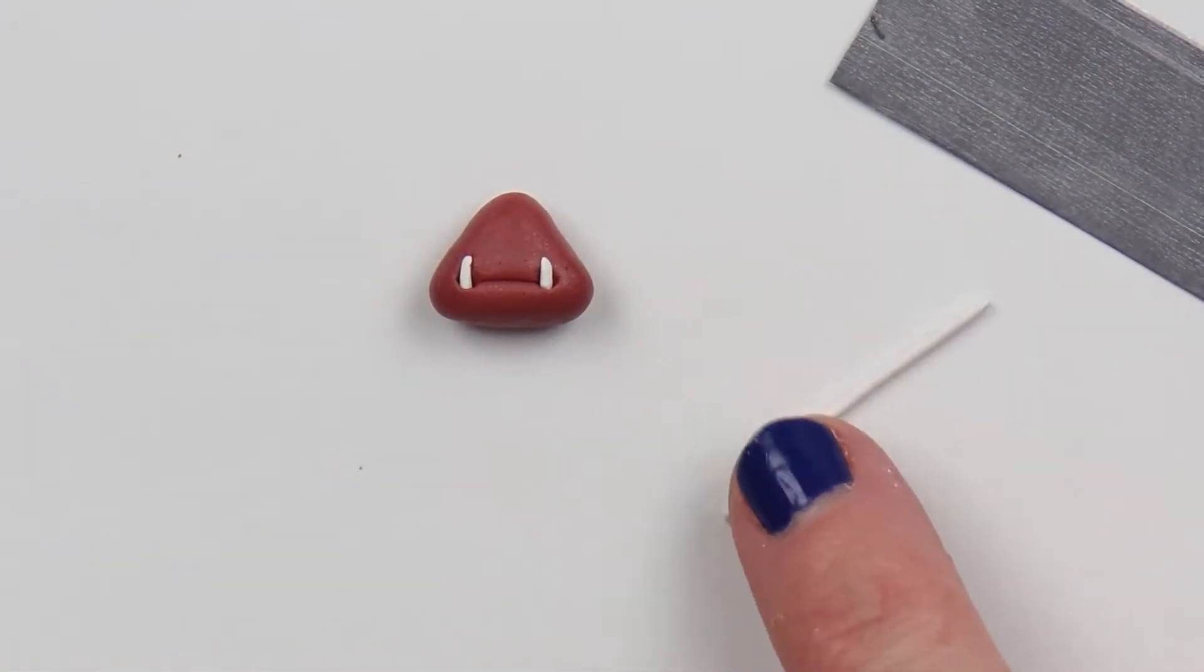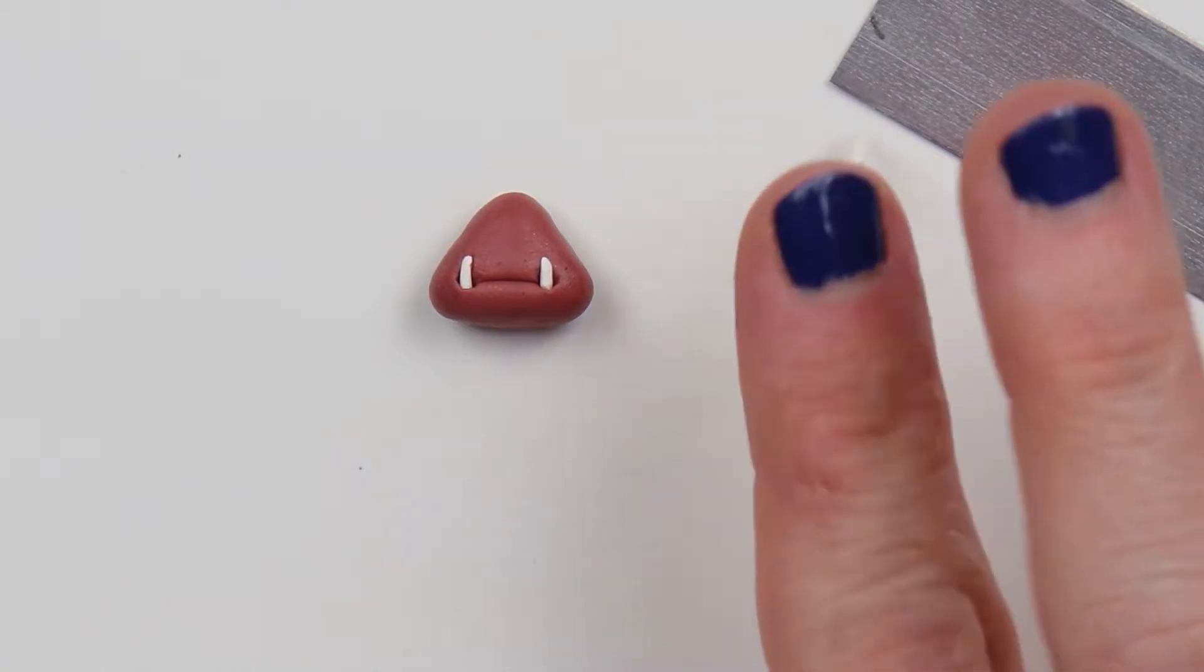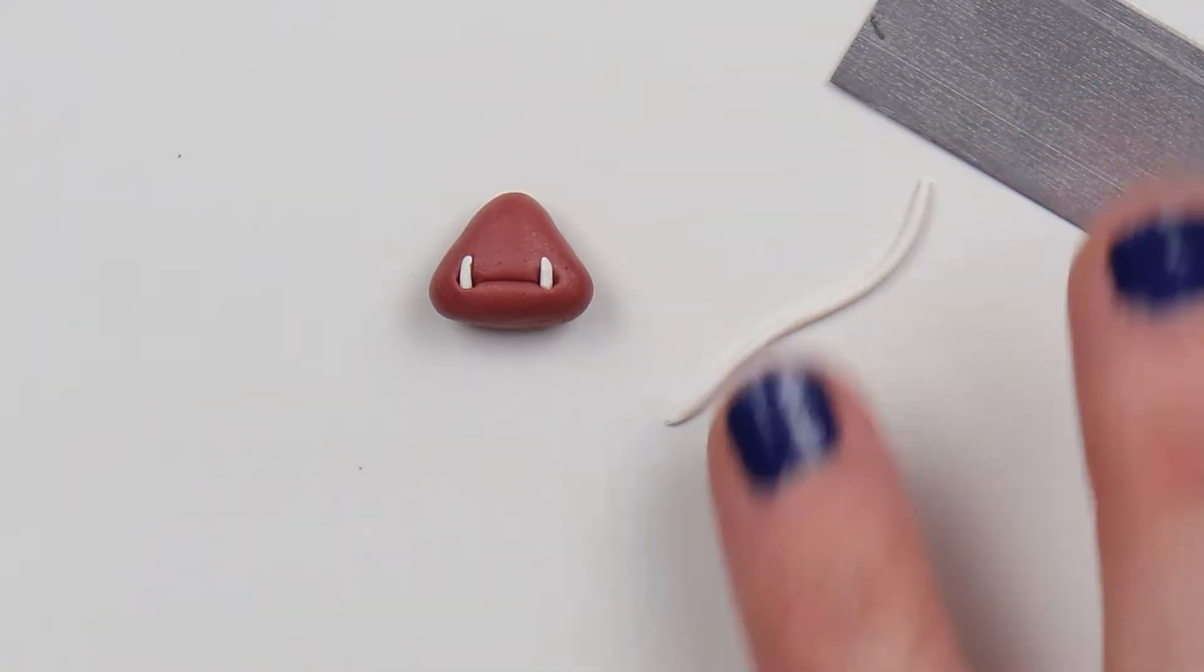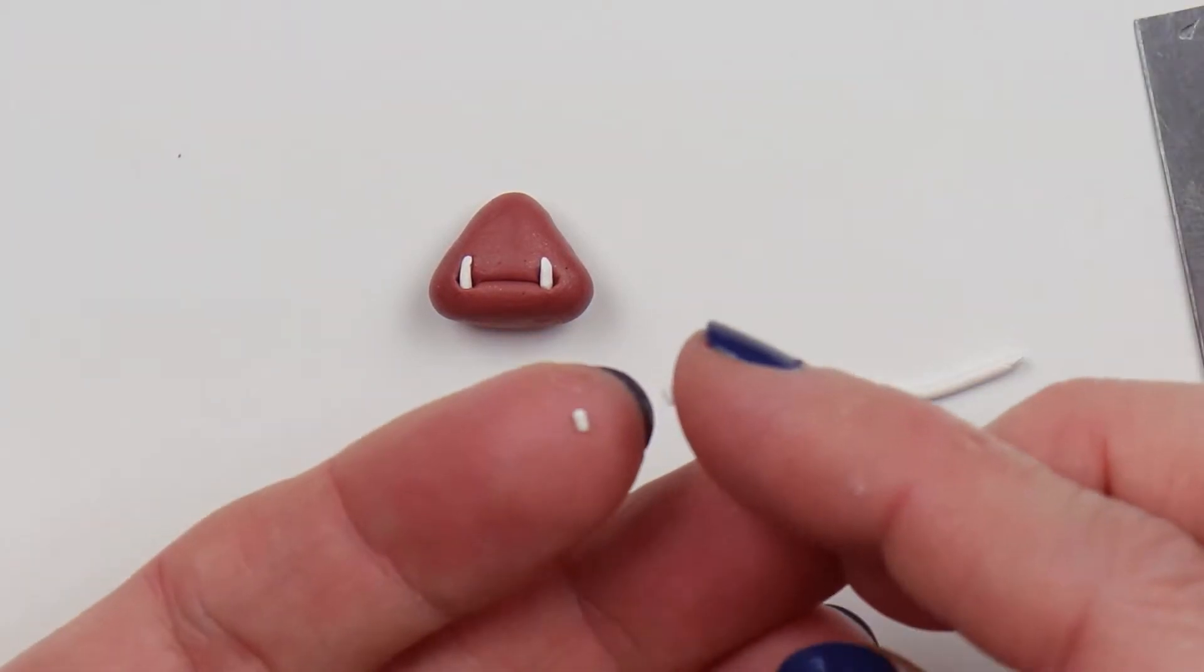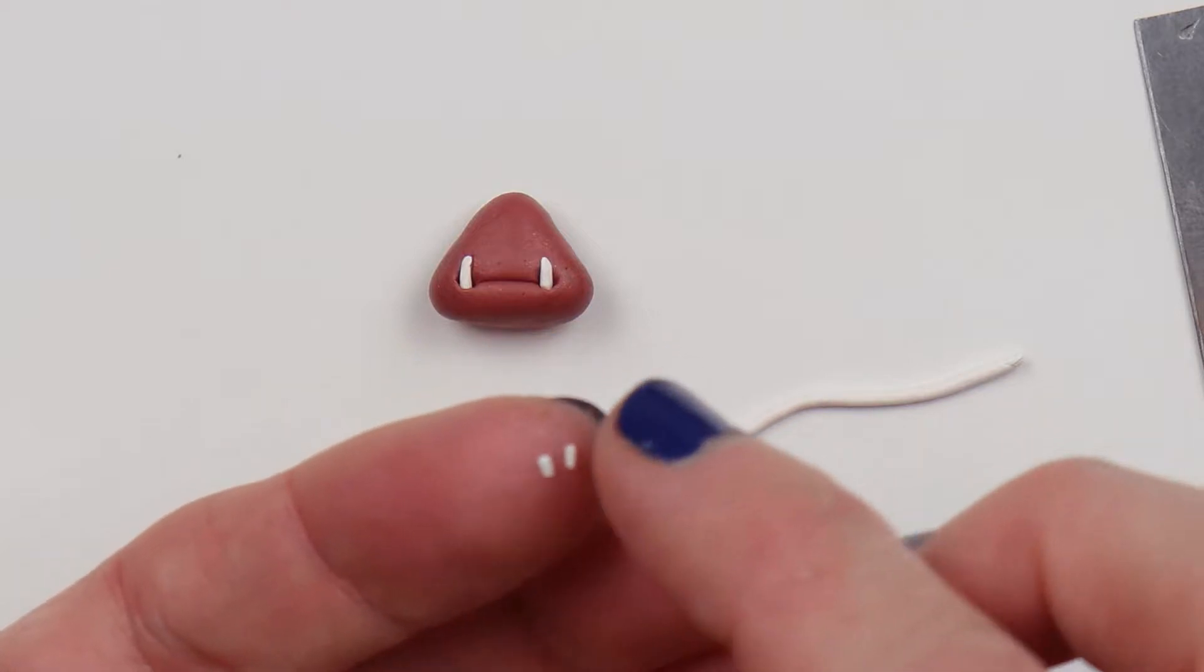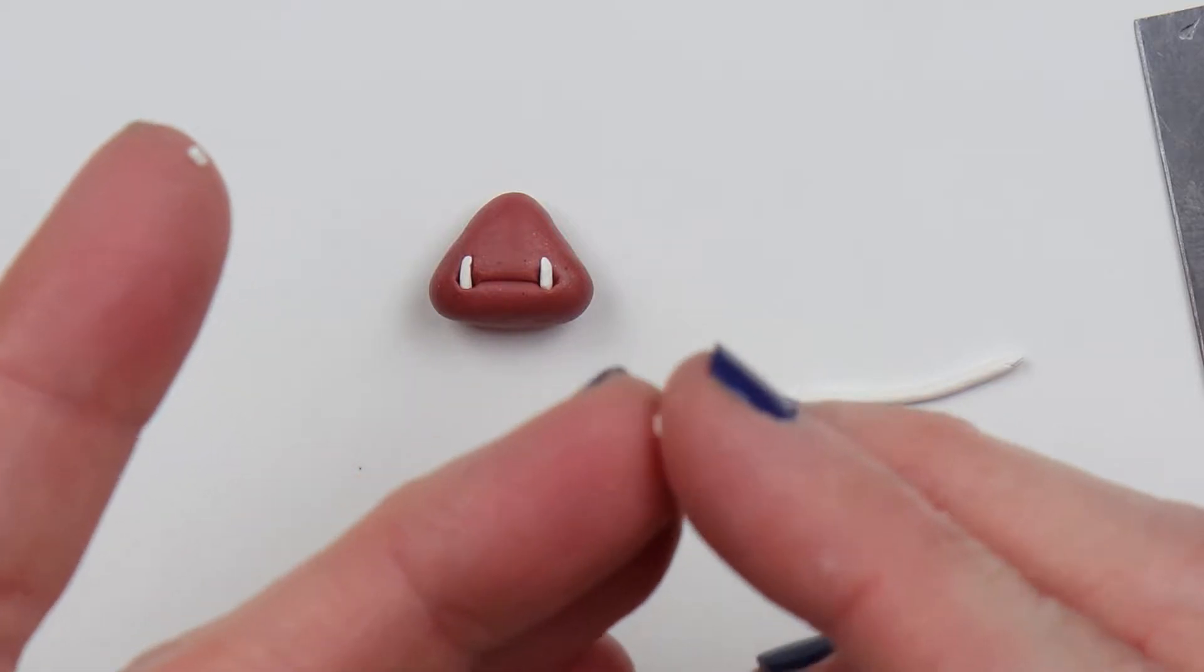Roll out some more white clay until it is thin. Cut off two equal length sections. Roll each one into a ball, and then gently flatten. You can tap it against a hard surface, or between your fingers.